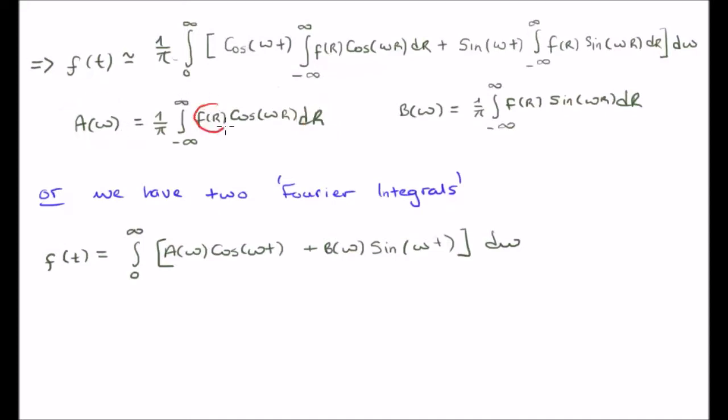So we're starting with a function of r, we're performing an integral on it where we are integrating out r and we are returning with a function of omega. So we're transforming from r to omega.